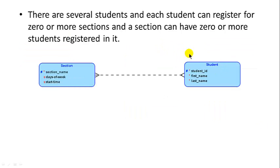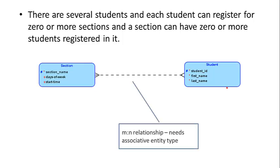Now let's take a look at the final thing, which connects students and sections. There are many students, and each student can register for zero or more sections, and a section can also have zero or more students registered in it. Why would a section have zero students? You offered it but nobody took it. Why would a student not take any section? They're taking the semester off, or this is a new student who's just been admitted and hasn't taken any course yet.